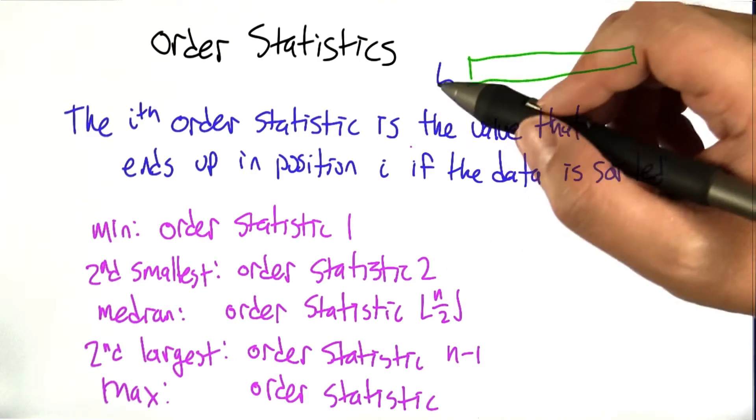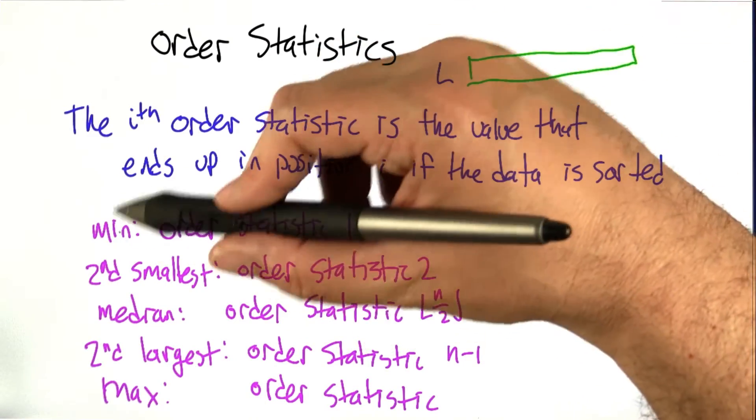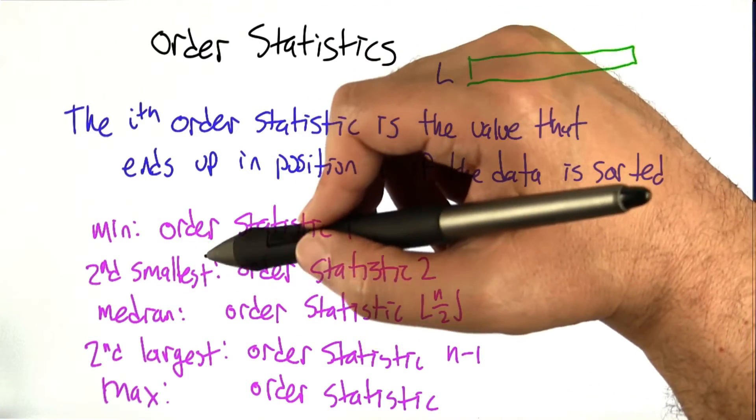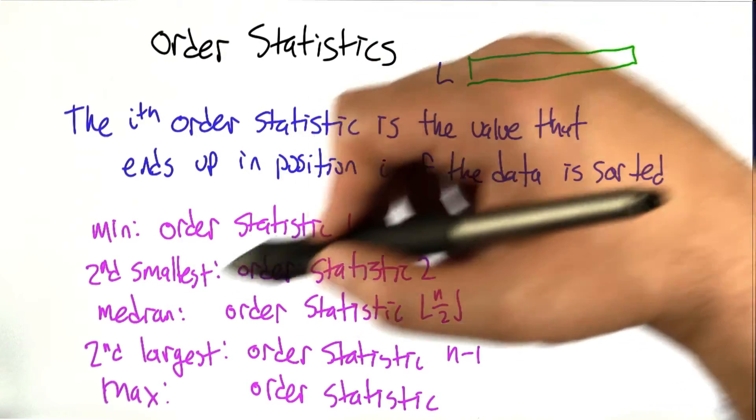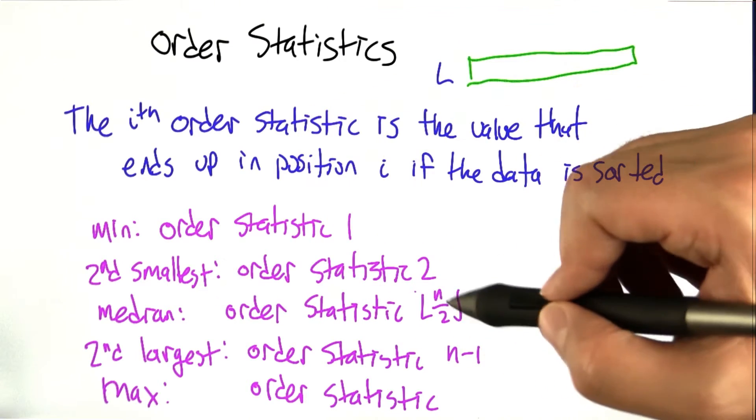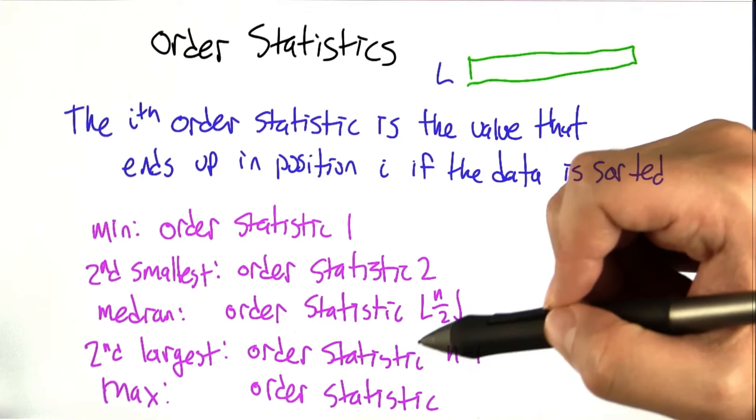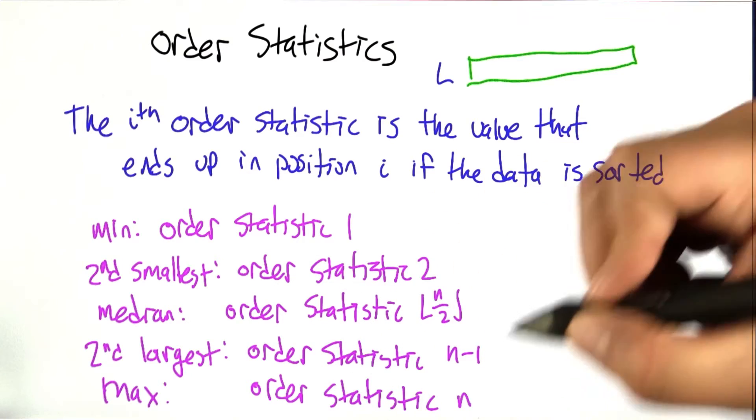This notion is generalizing min and max. The min can be expressed as order statistic 1, the second smallest element of the list is order statistic 2, the median is order statistic n over 2 (floor), the second largest is order statistic n minus 1, and the max is order statistic n.